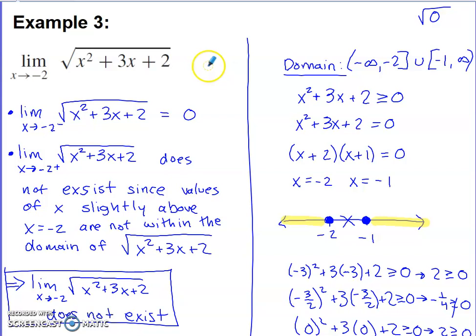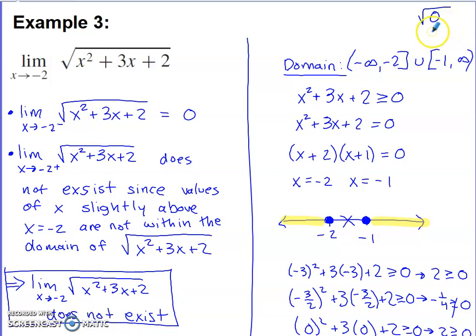For the third example, put negative 2 in place of the x's. Negative 2 squared is 4, and 3 times negative 2 is negative 6 plus 2, giving square root of 0. Square root of 0 isn't concerning in general math, but within a limit it is — because I can take the square root of a value bigger than 0 and get a real answer, but the square root of a number smaller than 0 gives an imaginary answer, and limits are not associated with imaginary values.